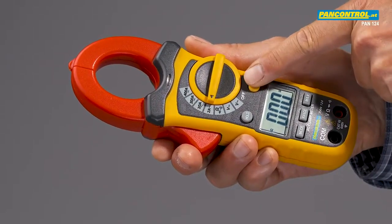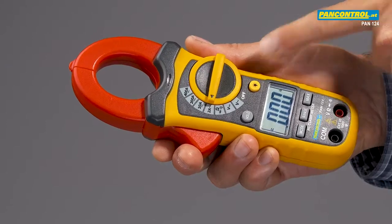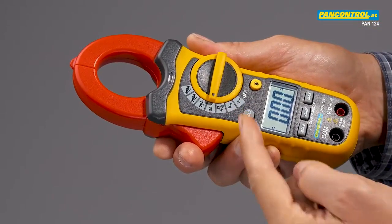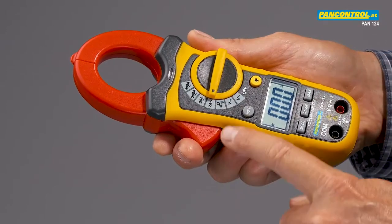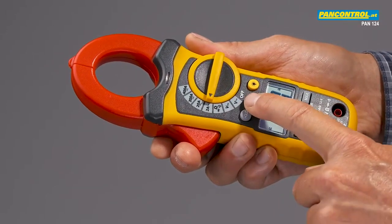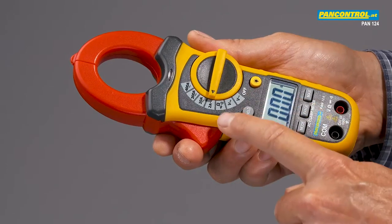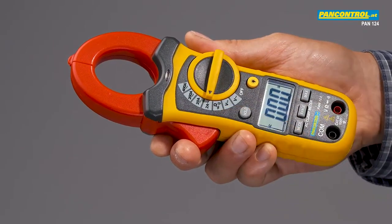Pan-124 has a backlit display, data hold function and maximum value memory. It measures AC and DC voltage up to 600 volts, resistance, diode test and continuity test.